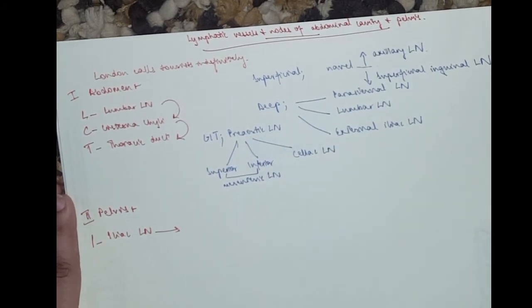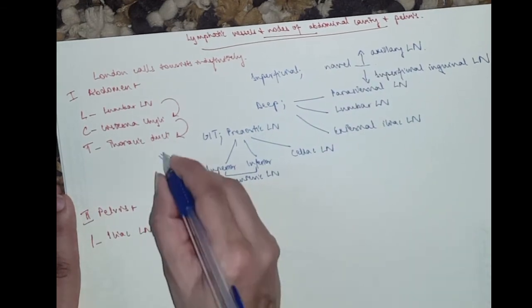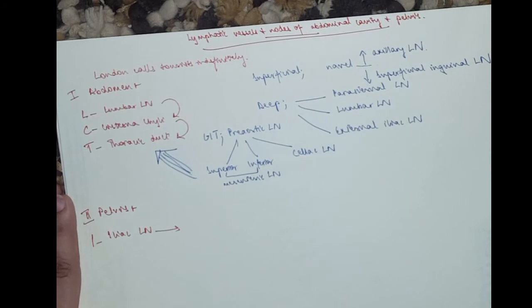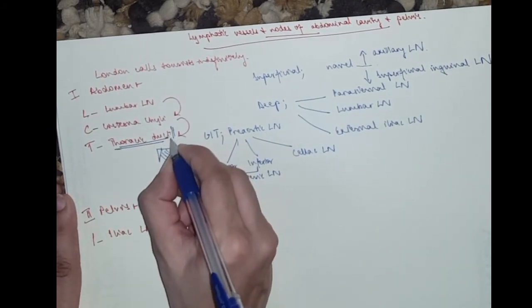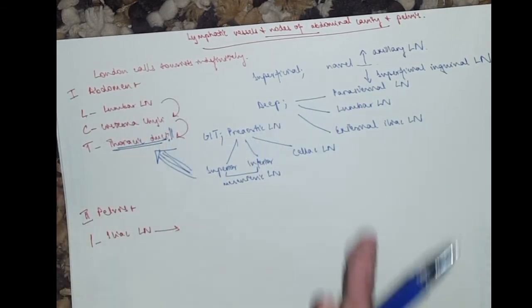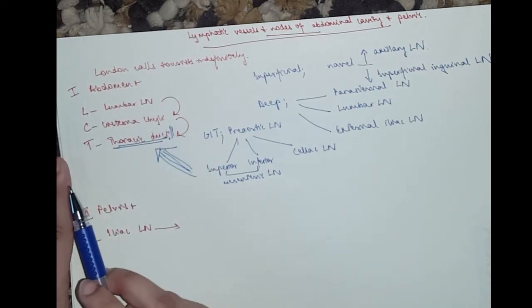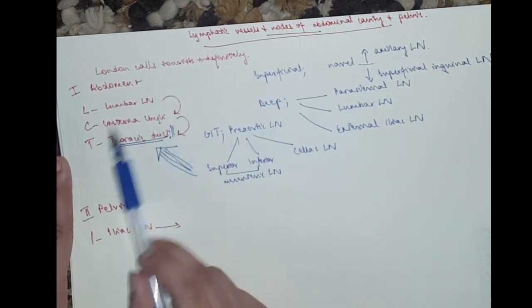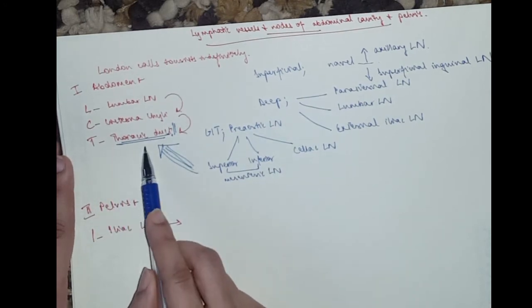And all of them, everything drains into the thoracic duct. It's a very important structure, guys. So the lumbar from the lower part of the body, everything, and even from the upper, it drains into the lumbar lymph nodes, which drain into the cisterna, which drains into the thoracic duct. I'll show you a picture in a bit.